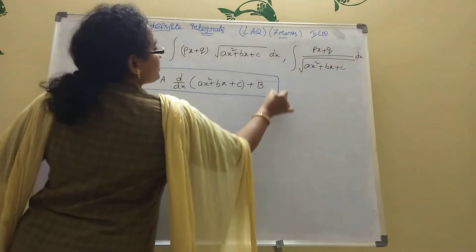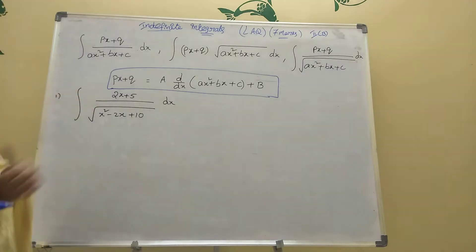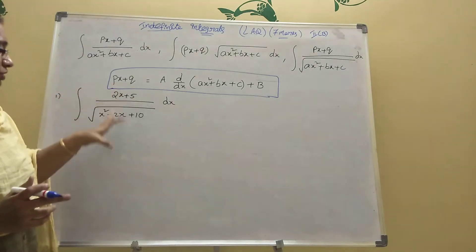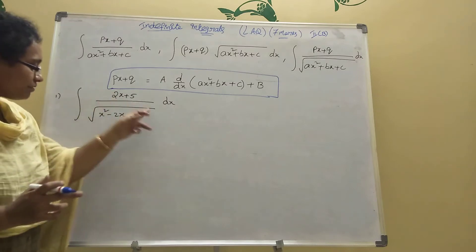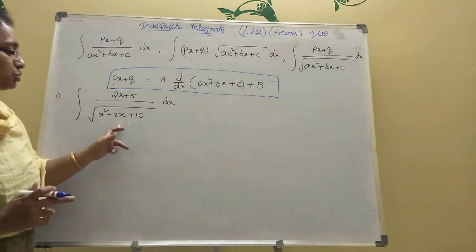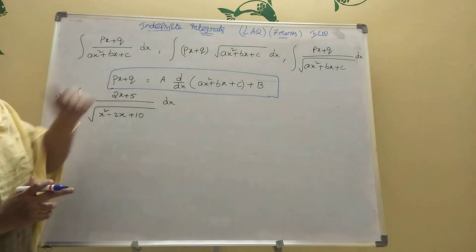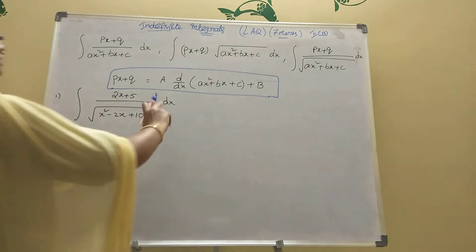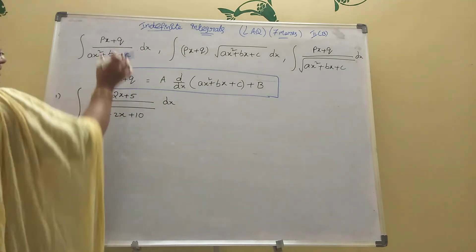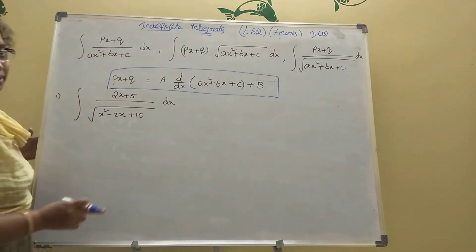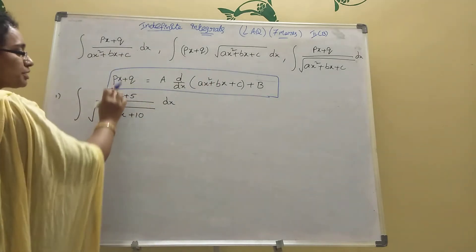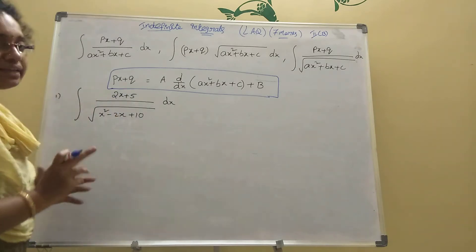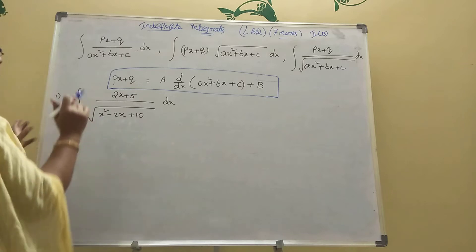Like this expression is there, then you cannot do like this directly. I am taking here one model: integration of (2x + 5) divided by (x² - 2x + 10). How do you define integration? Now we are discussing that only. Then the third model is there - px + q means the numerator. First you should find a and b values.